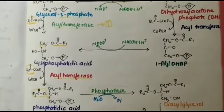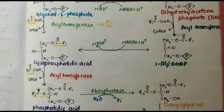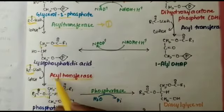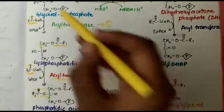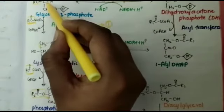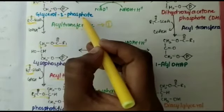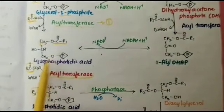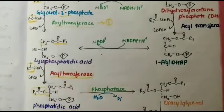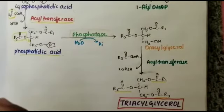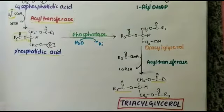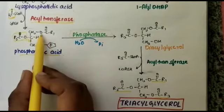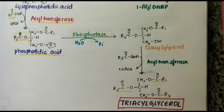Lysophosphatidic acid will convert into phosphatidic acid by the same acyltransferase enzyme. The second acyl group comes and occupies the second OH group on the second carbon of glycerol-3-phosphate. So the two acyl groups are transferred into the OH groups of glycerol-3-phosphate, forming phosphatidic acid.